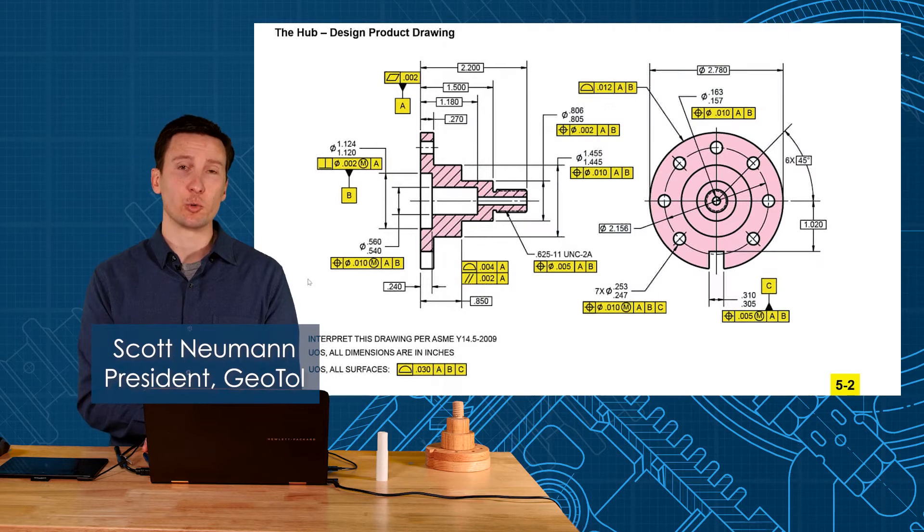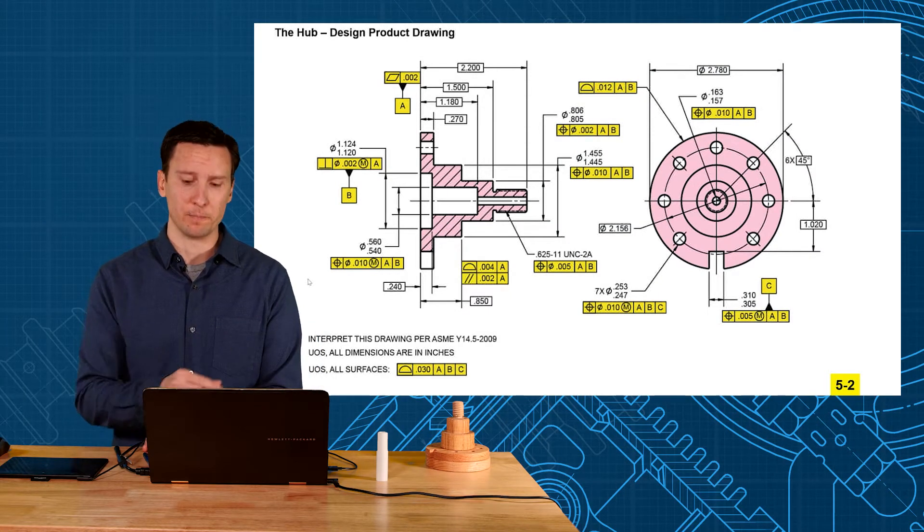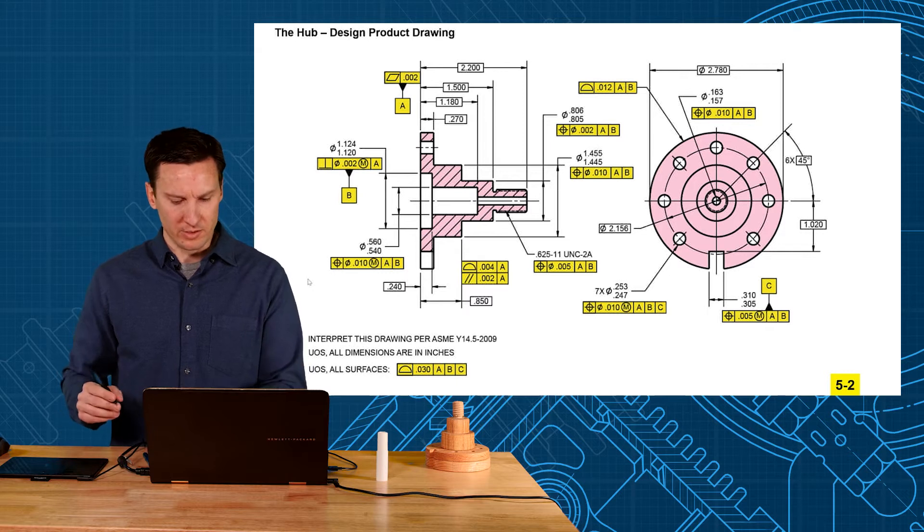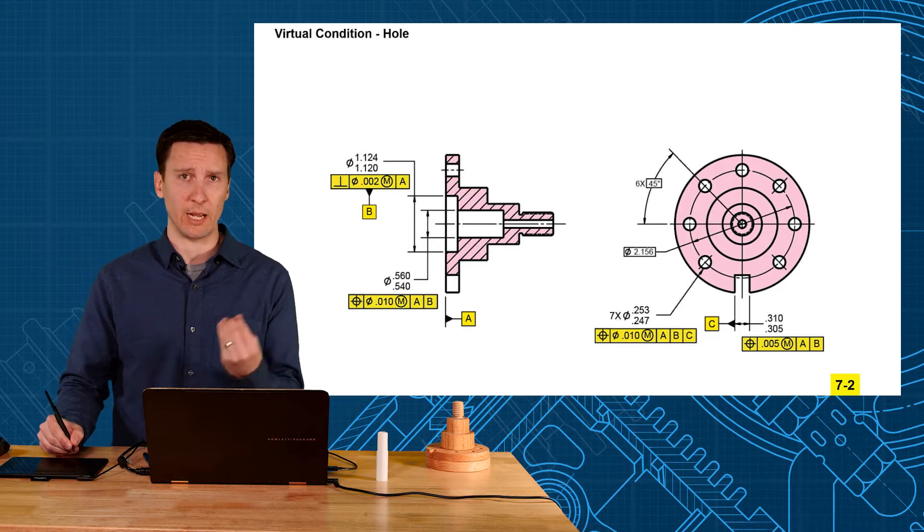So I'd like to introduce a concept called virtual condition and I'm going to use a drawing that we saw in unit 5, the hub. Now the drawing is very busy here so I wanted to clear off some of the information so we can concentrate on the relationship between A and B.